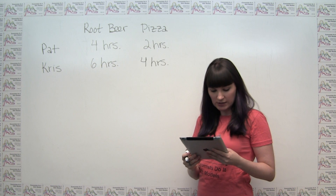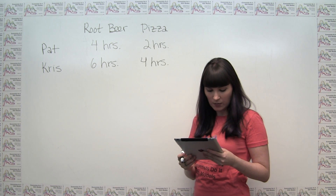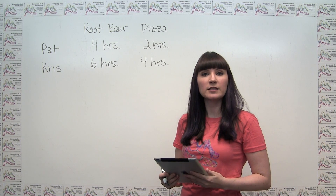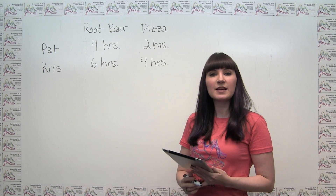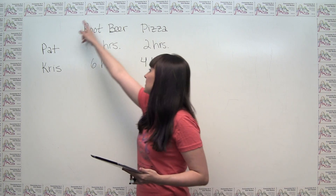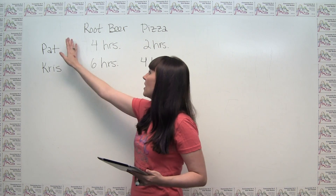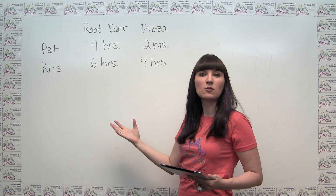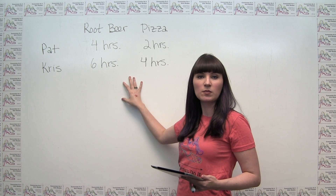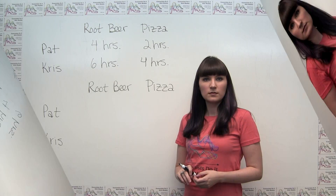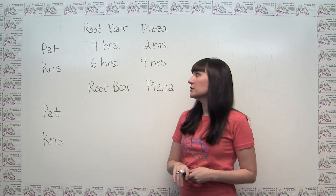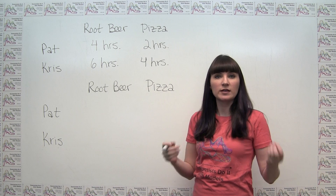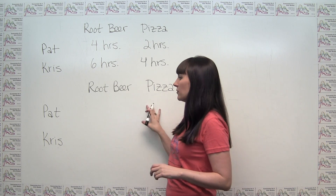Part A of the question asks: what is each roommate's opportunity cost of making a pizza? It also asks about absolute and comparative advantage. To examine that, it's important to remember that we need to deal not directly with the time required to make each item, but more directly with productivity — the rate at which each person can make these items. So let's think about how to convert these times into rates.